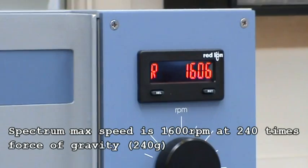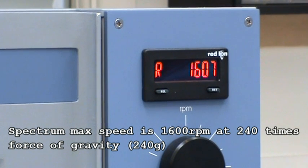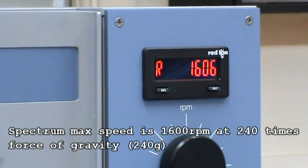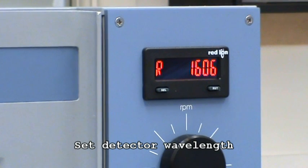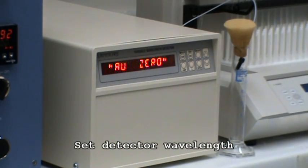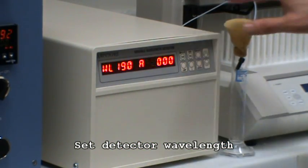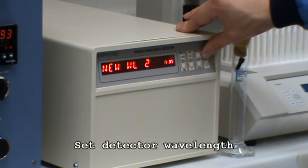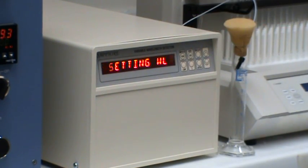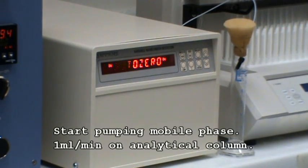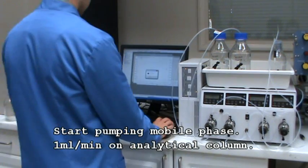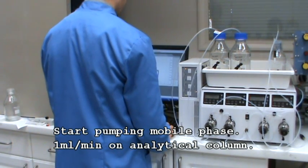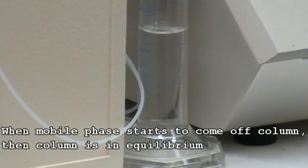The maximum speed is 1600 rpm at 240 g. Set the detector to the required wavelength, in this case 254 nm. Set your program going and begin to pump mobile phase. After a given amount of time, mobile phase will start to come off the column.